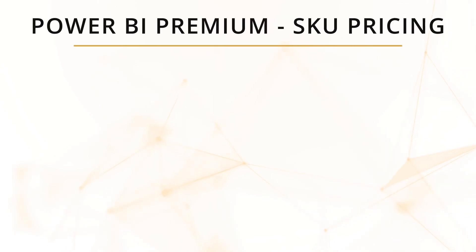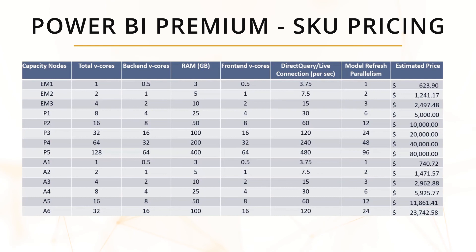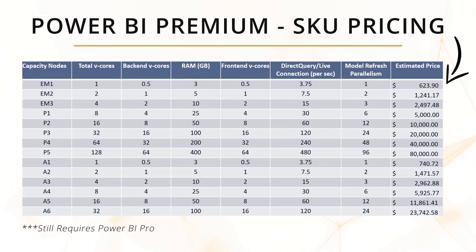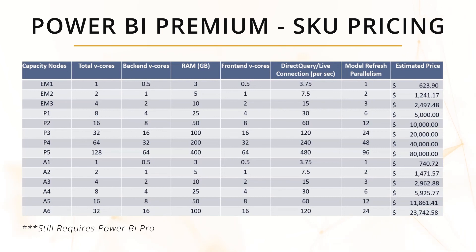Here is a quick licensing table you can use to see the actual costs for all the different premium licensing options. Power BI Pro is straightforward at $10 per month per user; Free is obviously free; Premium Per User is $20 per month per user. This table also breaks down estimated pricing for all premium capacities — from the EM SKUs all the way through the P SKUs and A SKUs.